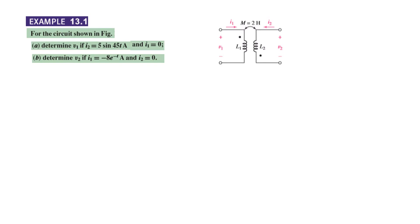Now let's clarify the concept with the help of solved example 13.1 in the book. The question says: for the circuit shown in the figure, determine V1 if I2 is given and I1 is 0. So because of I2 we will have a voltage induced in the primary side which is V1, and we have to find that value. In the second part, I1 is given and I2 is 0, therefore we will have an induced voltage V2 to find using I1.